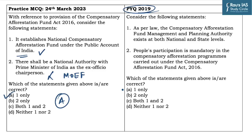The answer to the previous year CA question is also A, which is one only. The second statement says people's participation is mandatory in the afforestation programs carried under the Act of 2016. One can eliminate this particular option because such facts do not require people's participation mandatorily. So one can eliminate this option and reach the correct answer.